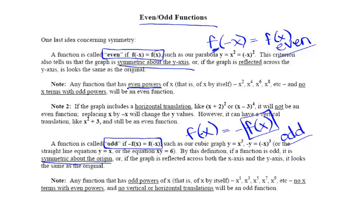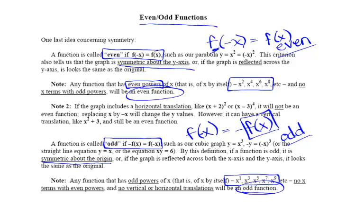Additionally, if you have a power function made up of nothing but even powers, you are guaranteed it is an even function. If you have a power function made up of nothing but odd powers, you are dealing with an odd function. For example, y equals negative x squared plus x to the fourth — if asked whether the graph is symmetric about the y-axis, the answer is yes, because it's a power function with nothing but even powers, making it an even function, and all even functions are symmetric about the y-axis.